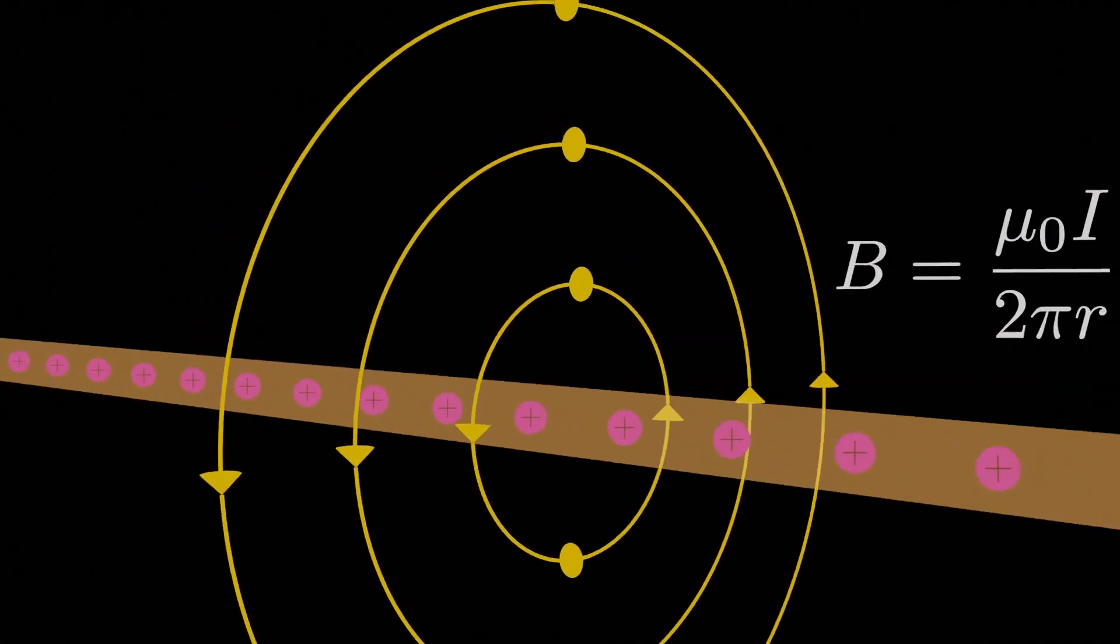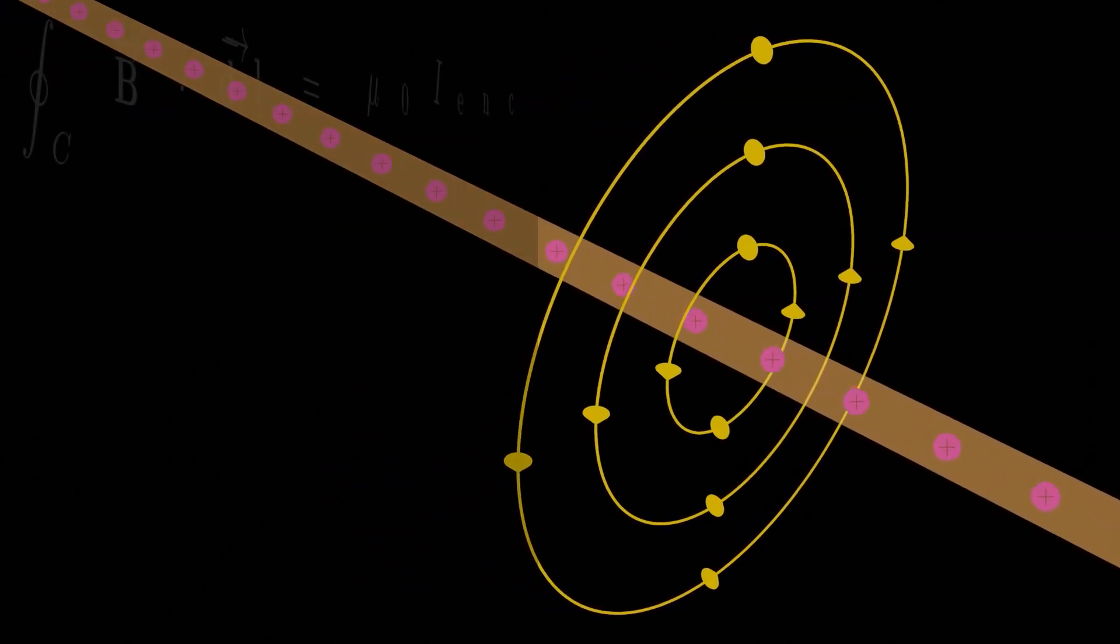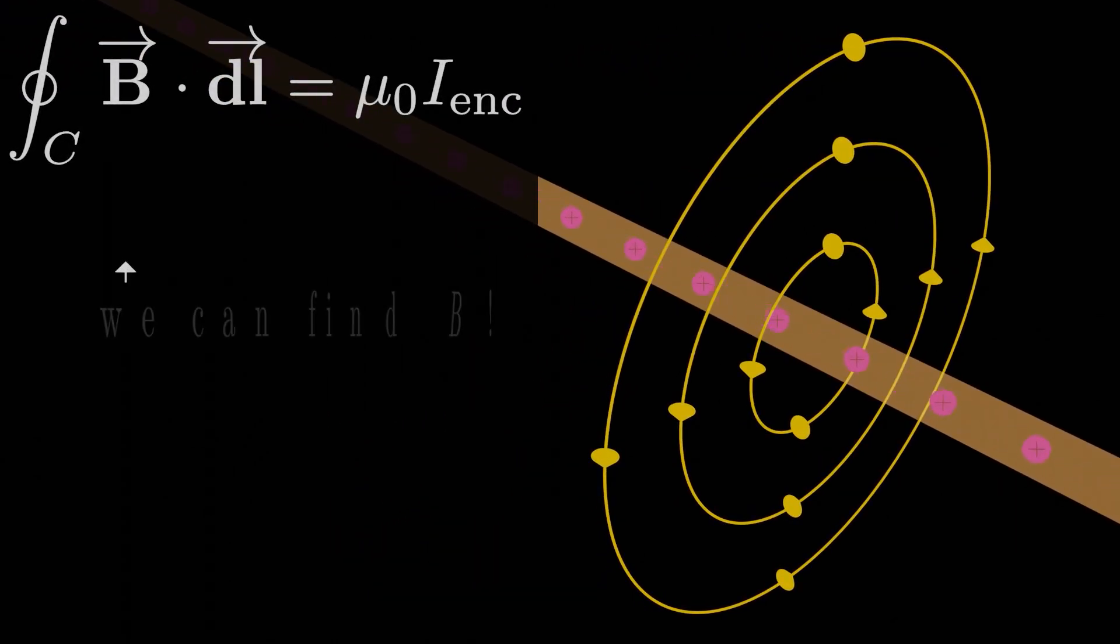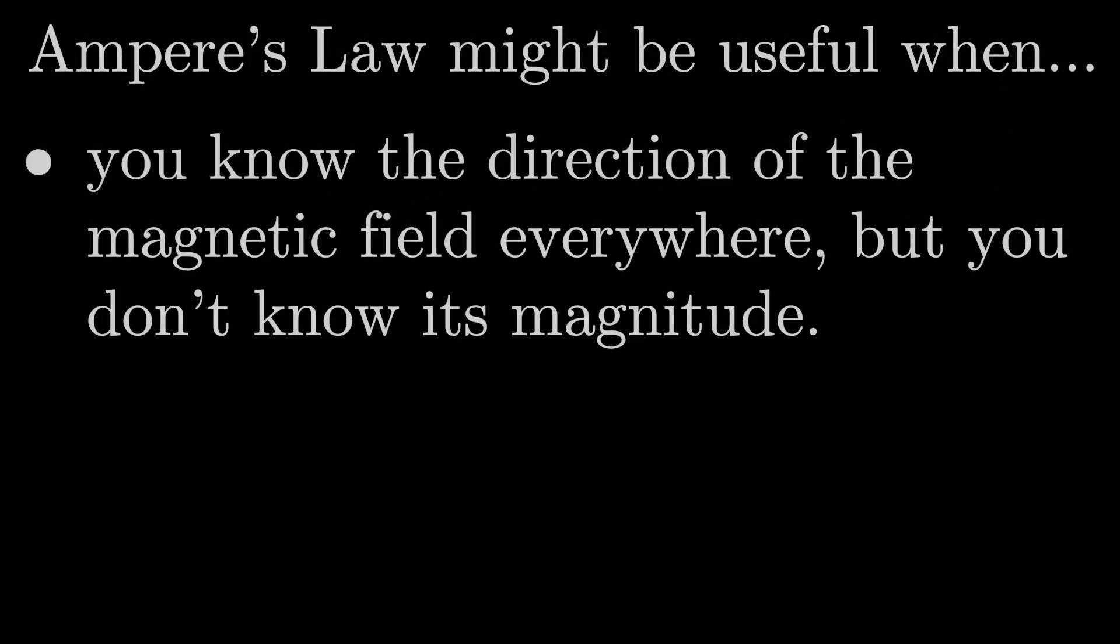Now, back to Ampere's law. Say, for example, we need the direction of the magnetic field lines around a long current-carrying wire, but not the magnitude. In other words, let's completely scrap this result we got from the previous lesson. All we know is the direction. If all we need was the direction of the field lines, but not the magnitude of the field itself, I propose that we can actually use Ampere's law to find the magnitude directly. That's actually one of the key situations where Ampere's law might be useful. It's useful when you know the direction of the magnetic field everywhere, but you don't know its magnitude.